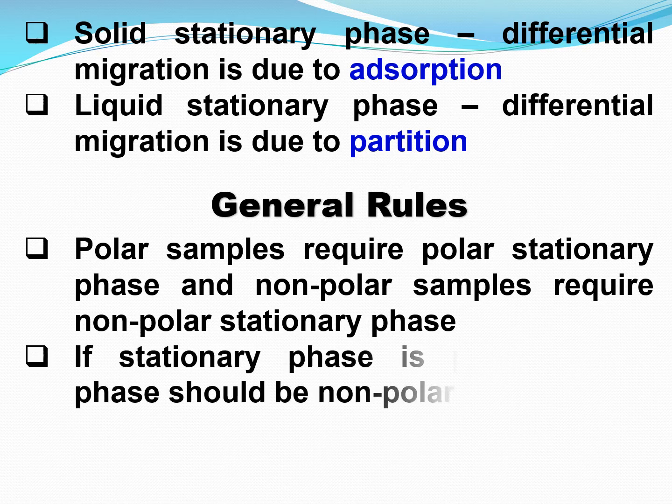The second rule is: if the stationary phase is polar, the mobile phase should be non-polar, and vice versa. The stationary phase and mobile phase should not be of the same polarity. If the stationary phase is polar, the mobile phase should be non-polar, and if the stationary phase is non-polar, the mobile phase should be polar.